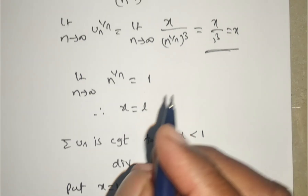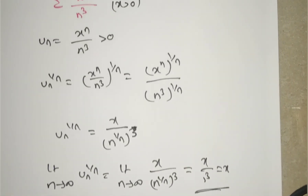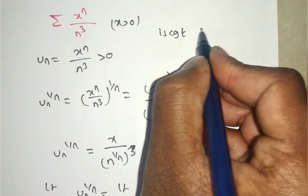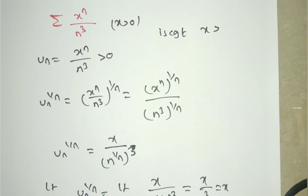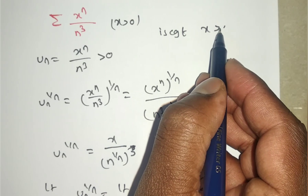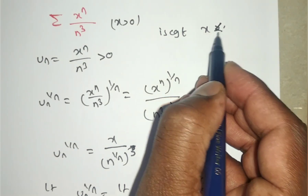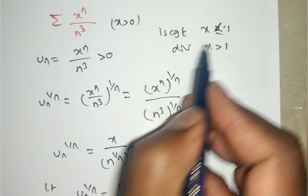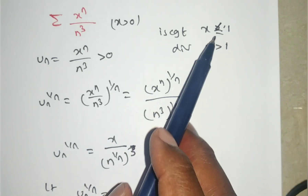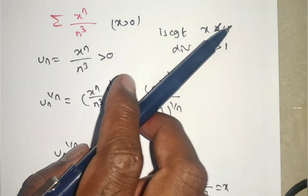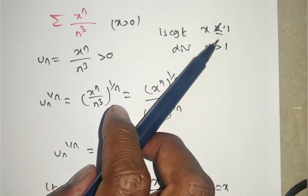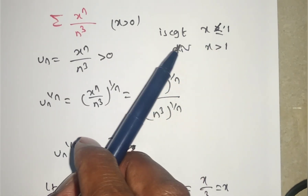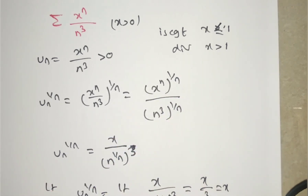In conclusion, the series Σxⁿ/n³ is convergent for x ≤ 1 (combining x < 1 and x = 1 both give convergence), and divergent for x > 1.